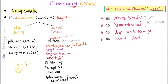Primary hemostasis disorders clinically can be asymptomatic — no symptoms, no problem — or present with mucocutaneous bleeding: bleeding from scratches, easy bruising, gingival bleeding, menorrhagia, etc. There is no deep bleeding, no late rebleeding, no hemarthrosis, and no deep muscle or cranial bleeding, except in very elderly patients with very low platelet counts.